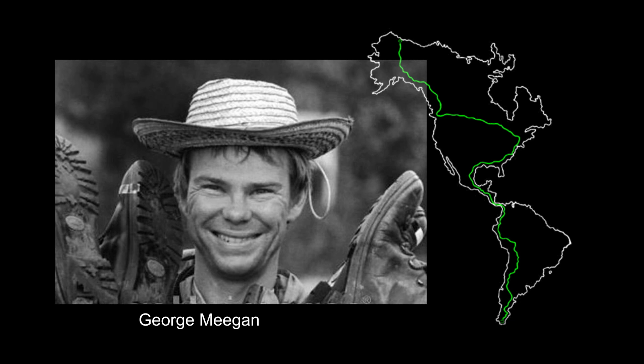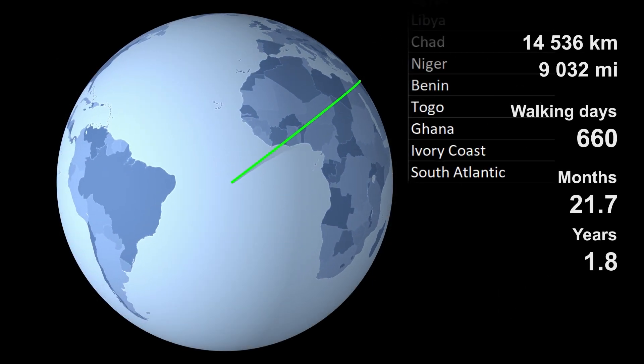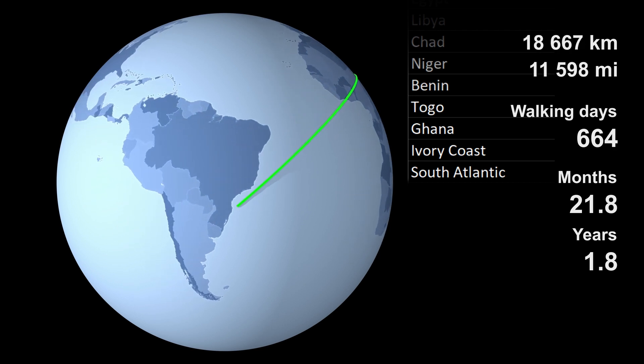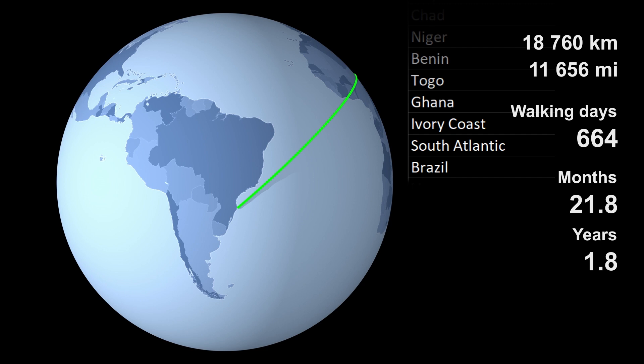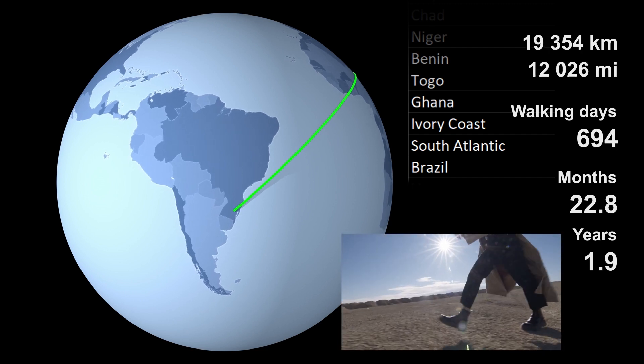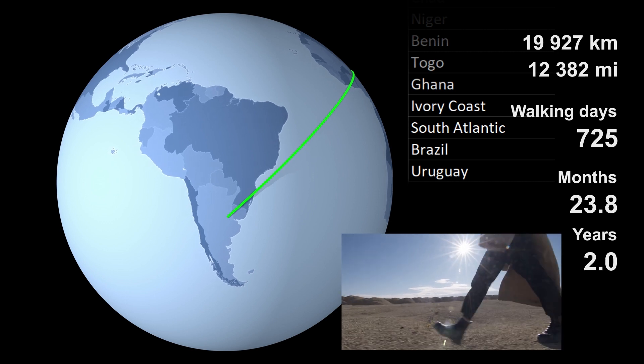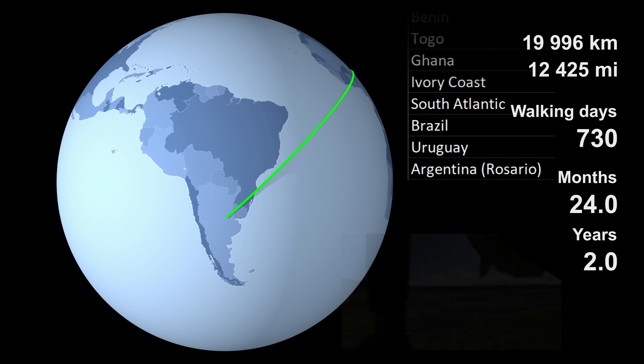He is one of the few people who could imagine the distance that we are talking about. So after a relaxing 6 day trip of 6000 kilometers or 3700 miles across the ocean we arrive in Brazil. After another 38 days he reaches Uruguay. After 52 days Argentina. And a bit over a week more and a travel time of 2 years we reach the city of Rosario.